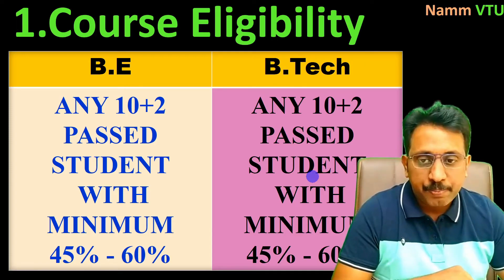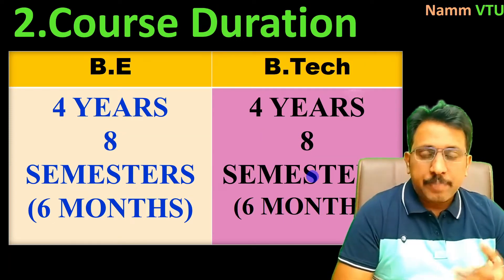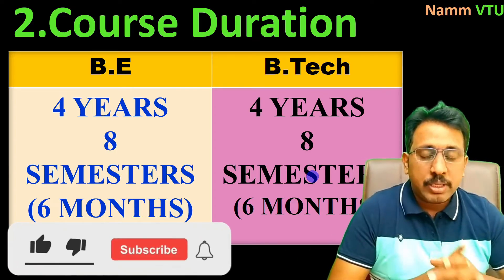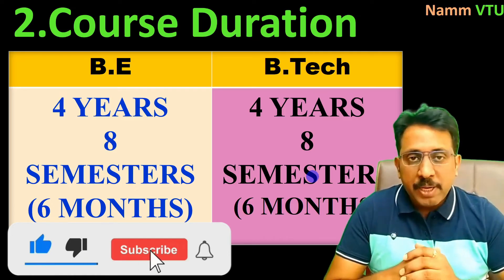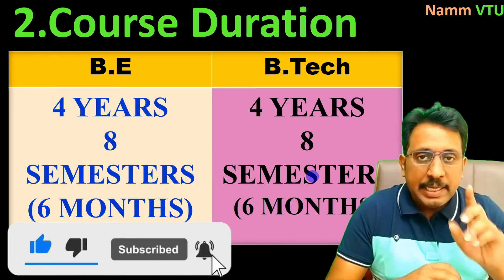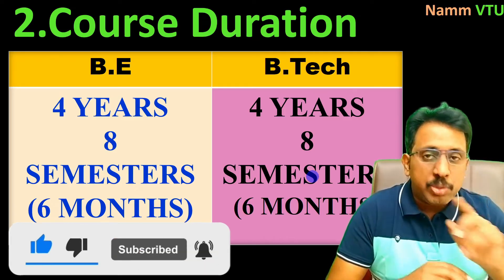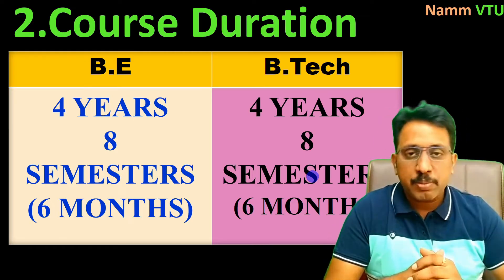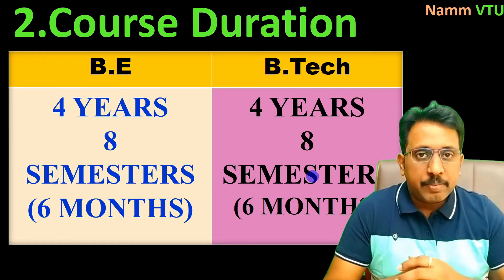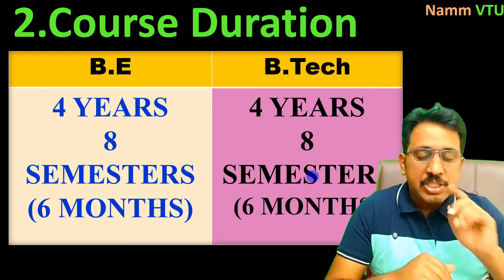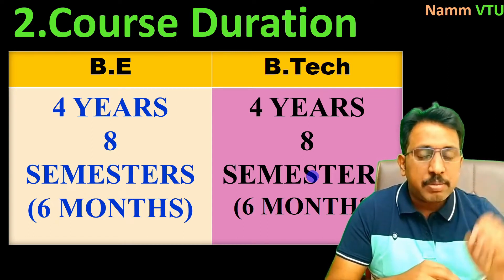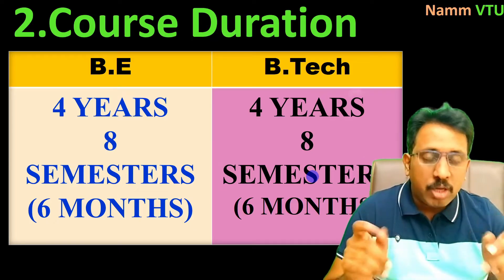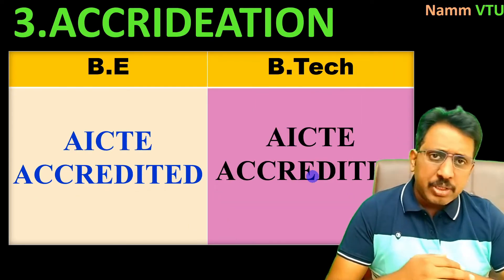Next, course duration. BE and BTech are the same here: both are four years, with two semesters each year, making eight semesters total, and each semester is six months. So course duration is almost the same for both.